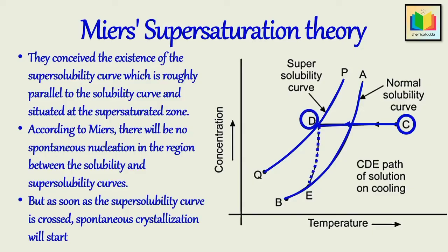For an initially unseeded solution, the curve PQ represents the limit at which spontaneous nuclei formation begins, and consequently crystallization can start. According to Miers' theory, under normal conditions nuclei cannot form and crystallization cannot occur in the area between the solubility curve and the super solubility curve — that is, at any position near point D along the line CD.